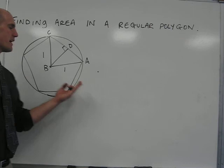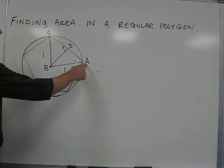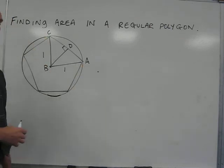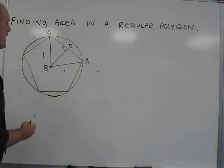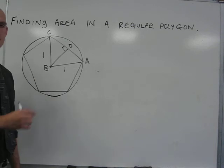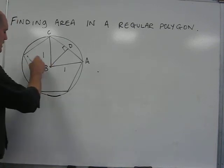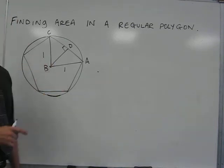In order to find the area of the regular pentagon inscribed inside the circle, we need to first understand that the area of the pentagon is really a series of five triangles inside the pentagon.